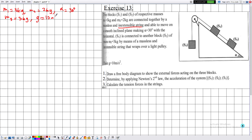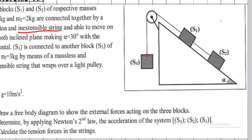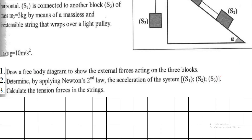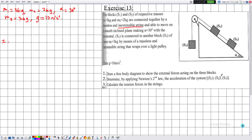We take g = 10 m/s², meaning this experiment is performed on the surface of the Earth. The aim of this exercise is: number one, to determine the acceleration of the system if it exists, and number two, to determine the tension in the string.